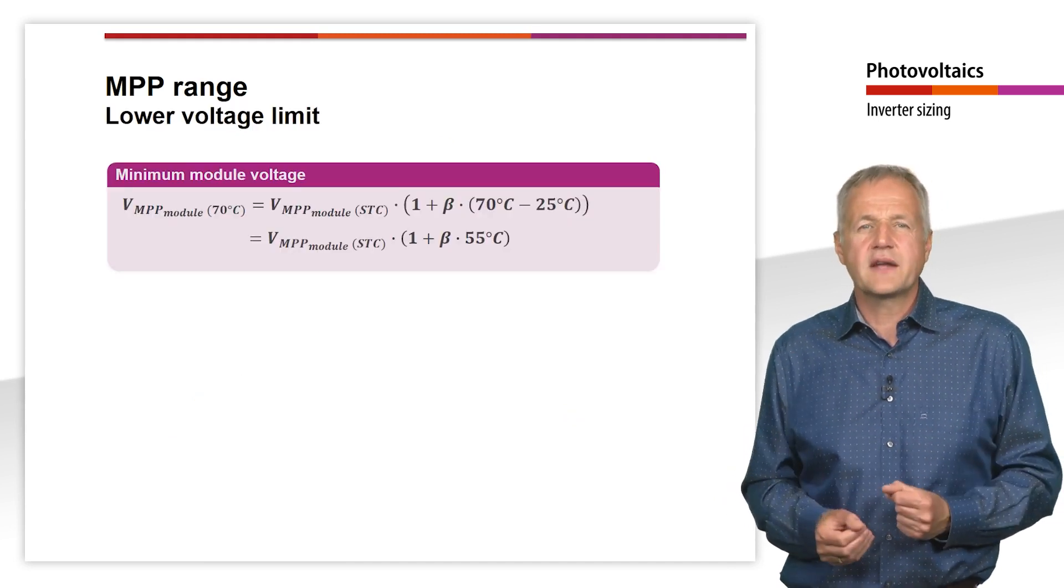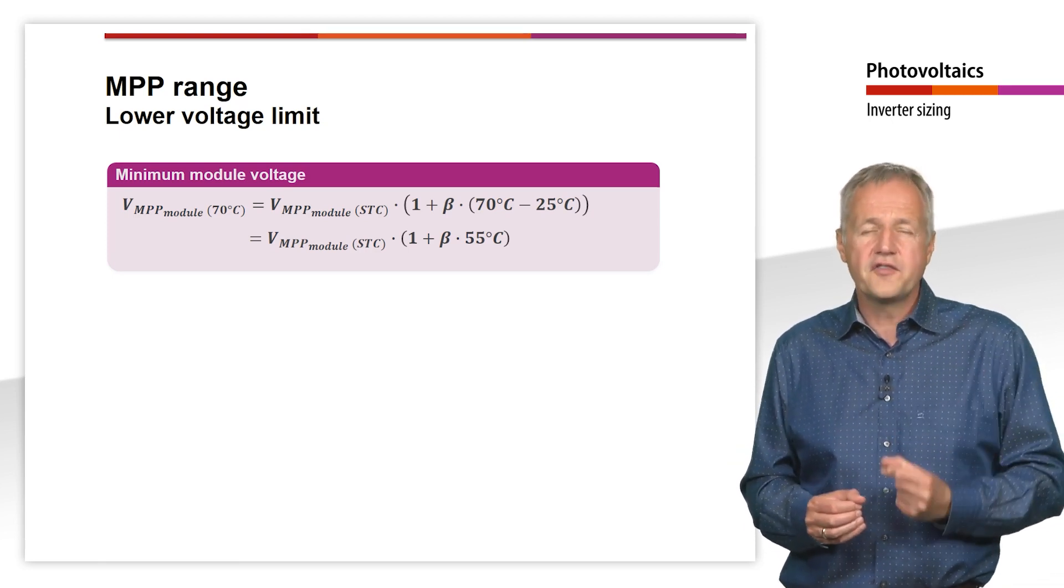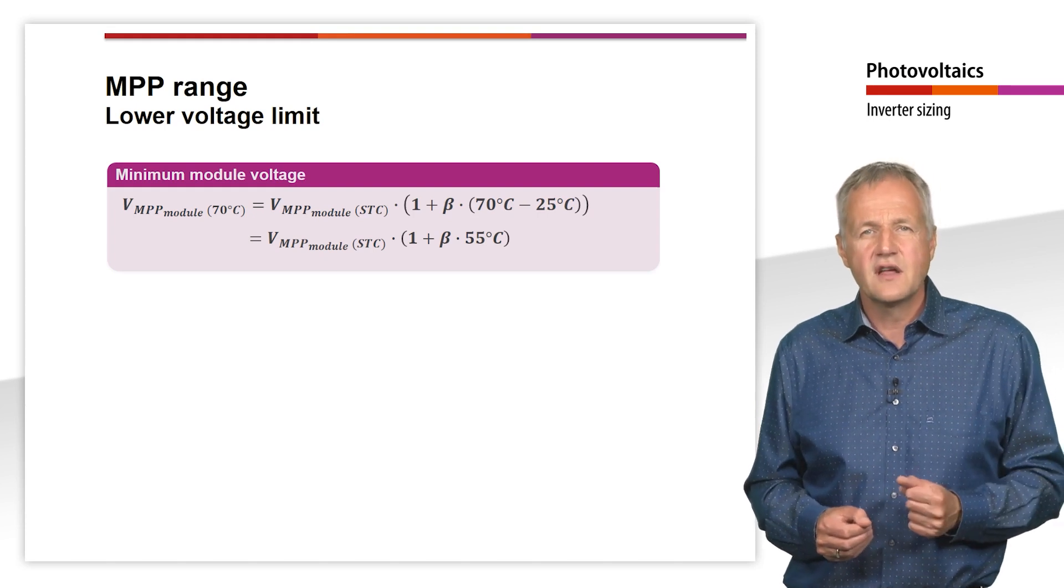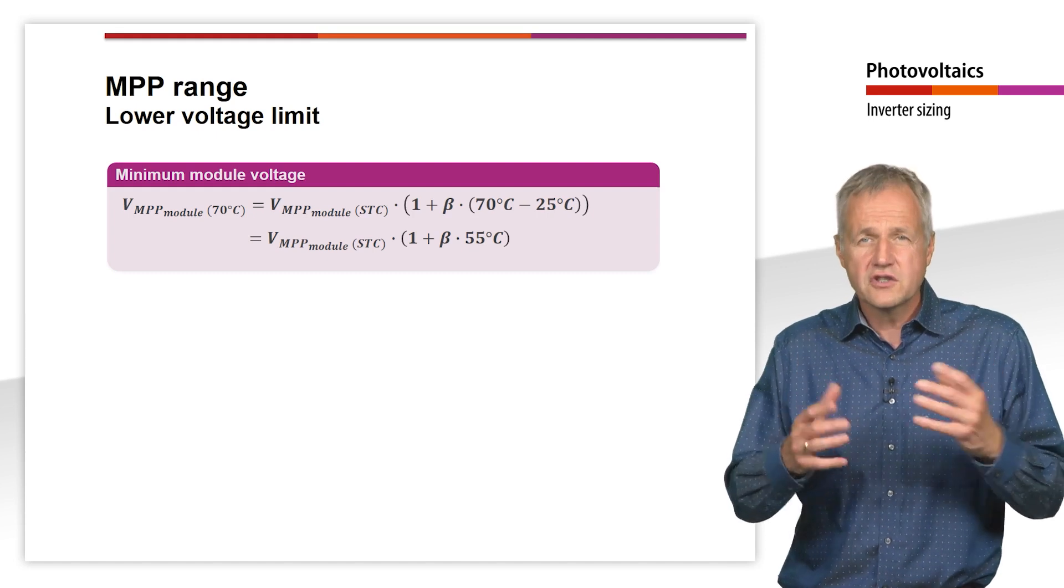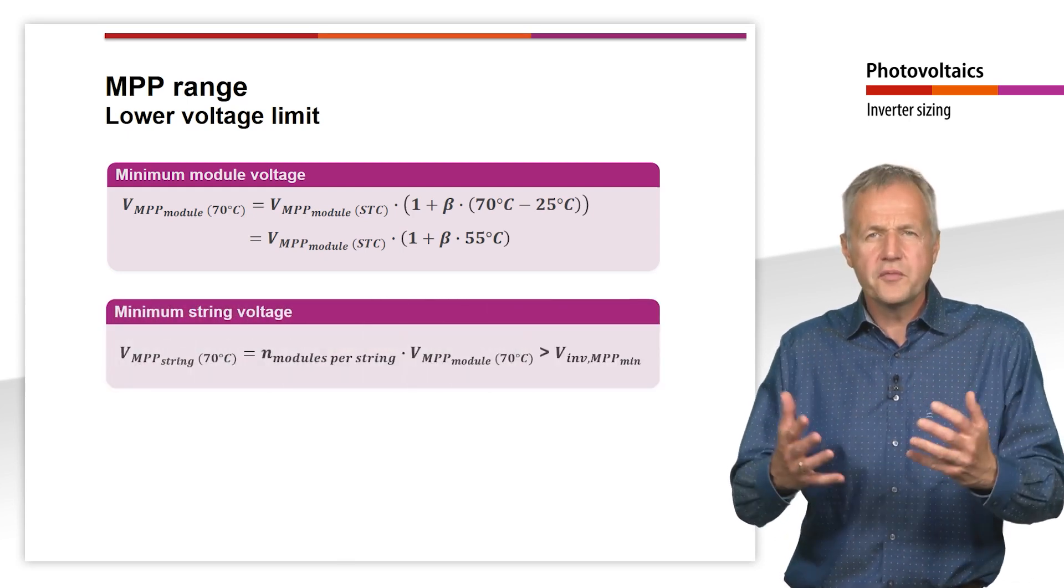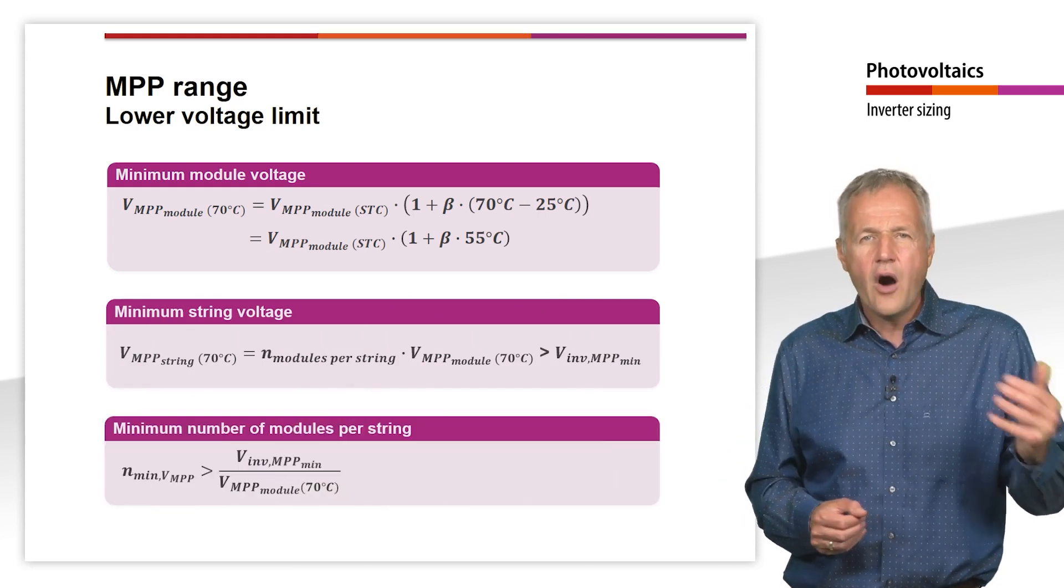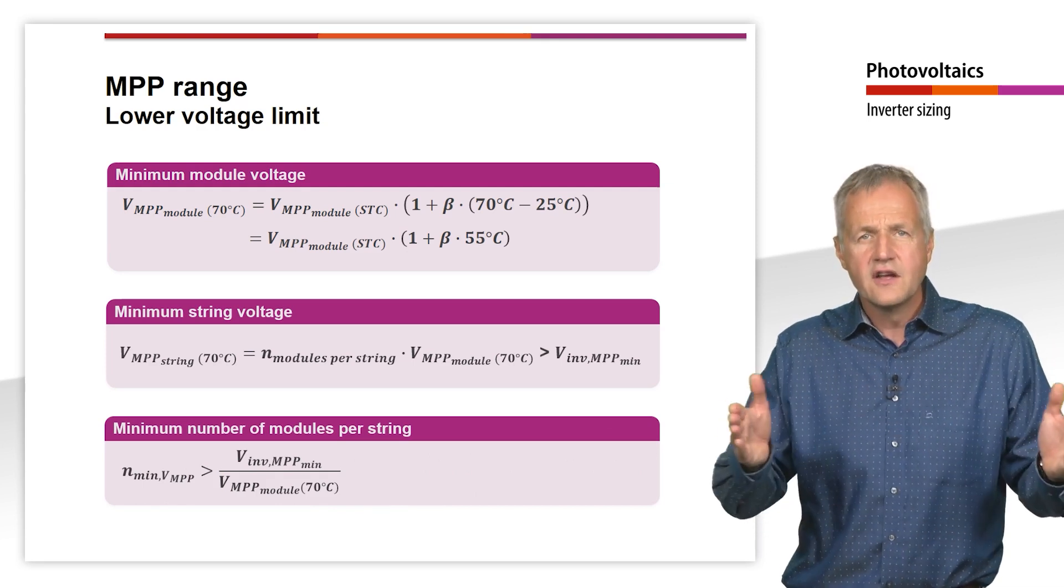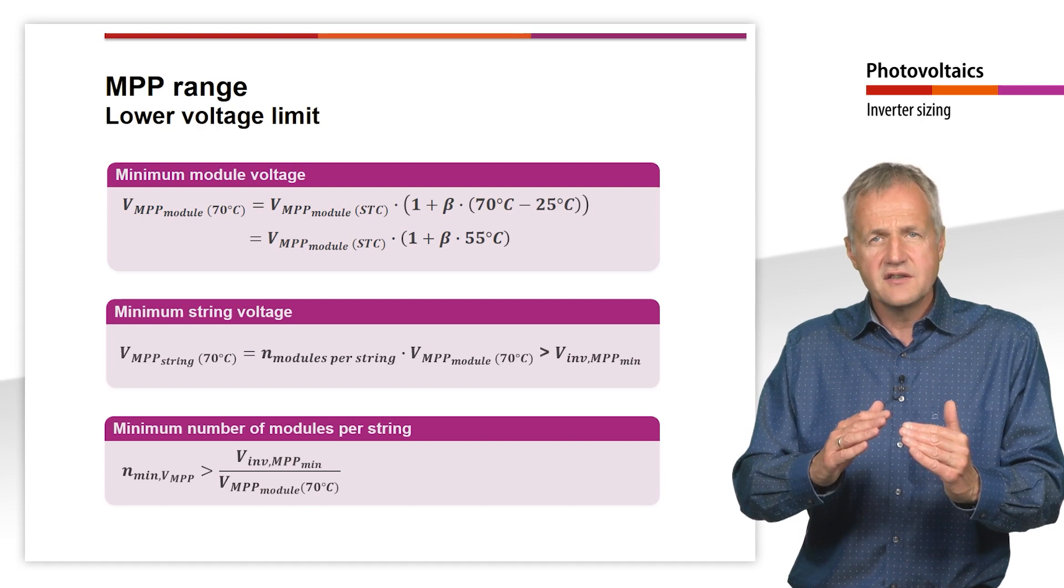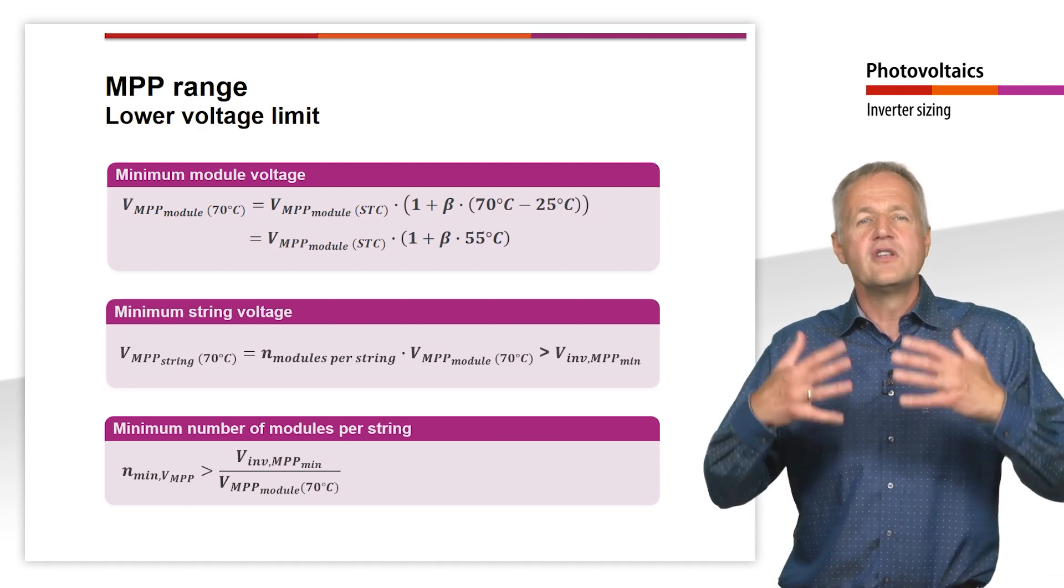In order to calculate the lowest expected MPP voltage for a specific solar module, we actually need the temperature coefficient of the MPP voltage. In most cases, however, this cannot be found in the datasheet. As an approximation, we can use the temperature coefficient of the open circuit voltage. From the minimum MPP module voltage, the minimum string voltage in the MPP can be calculated as before. If we want to calculate how many modules have to be connected in series to stay within the MPP range of the inverter, we calculate the coefficient of the module voltage in the MPP and the minimum MPP voltage of the inverter. The number of modules must be larger than this coefficient.